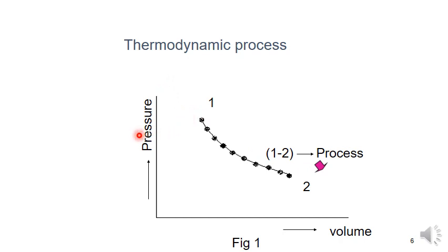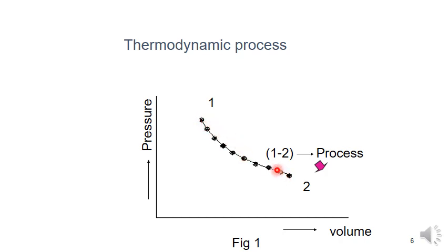On a pressure-volume diagram, we can see the state changing during interaction from state 1 to state 2. The temperature changes from high to low. The path from 1 to 2 represents the process, and the dots represent intermediate states. State 1 to state 2, during interaction with the surroundings, is called a thermodynamic process.